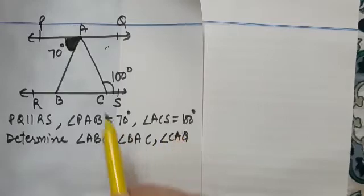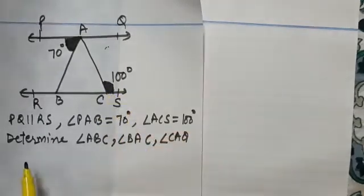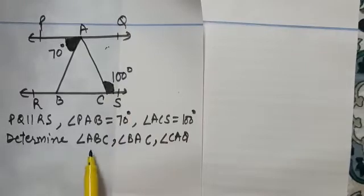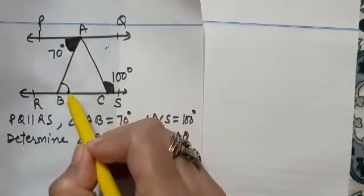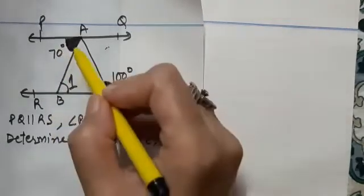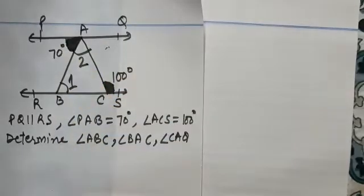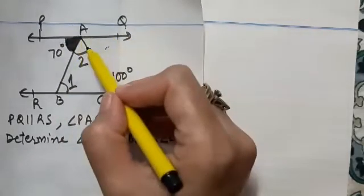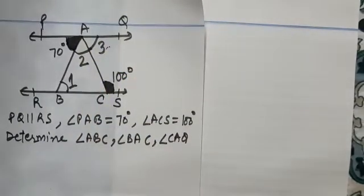Angle ACS is 100 degrees. We need to determine angle ABC, that is, we can label this as angle 1. Angle BAC, let us mark this as angle 2 and angle CAQ, let us mark this as angle 3.